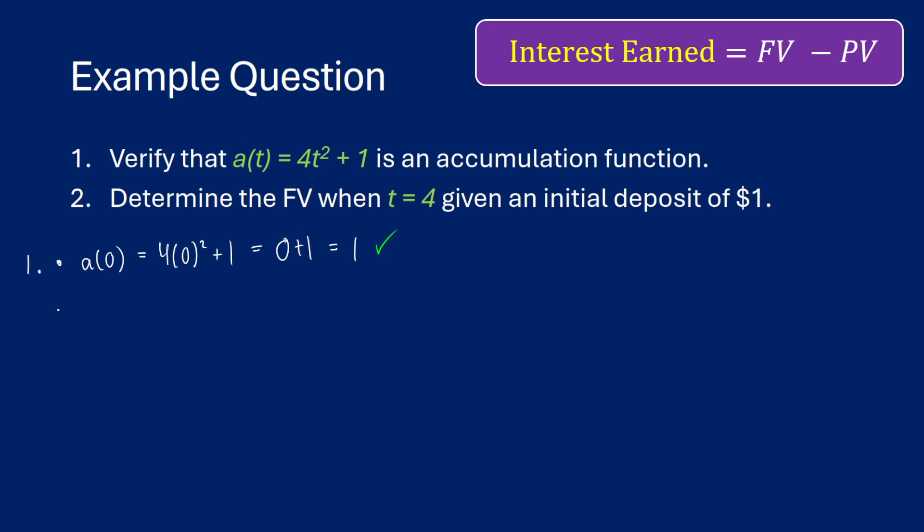Now, the second one is asking, is it increasing? Well, to do this, we can just take the derivative of our function and then see what it's doing for values of t. So the derivative of 4t² + 1 is just going to be 8t. And we know that t is always going to be greater than or equal to 0. Therefore, our derivative will always be non-negative. So it's basically always going to be increasing, which is exactly what we want.